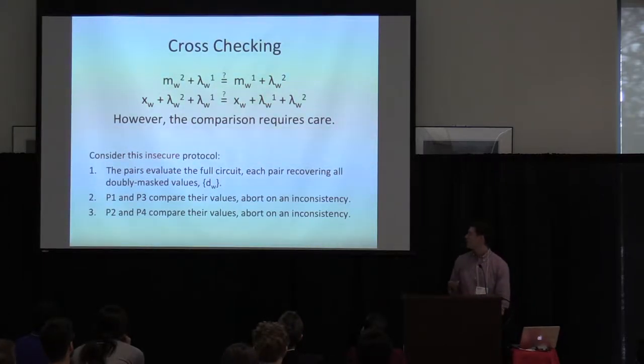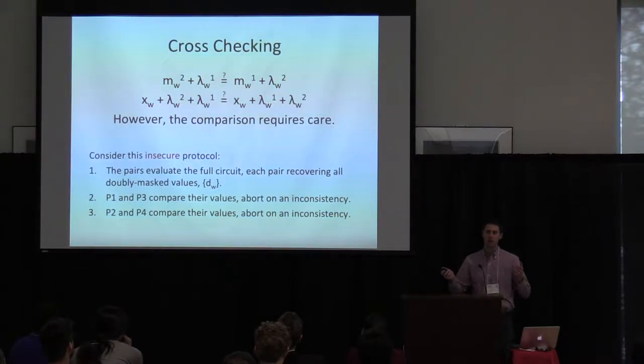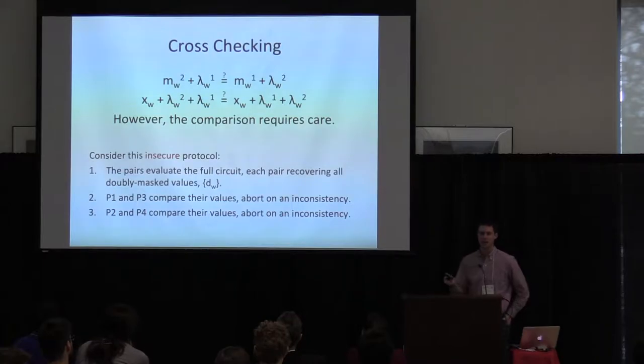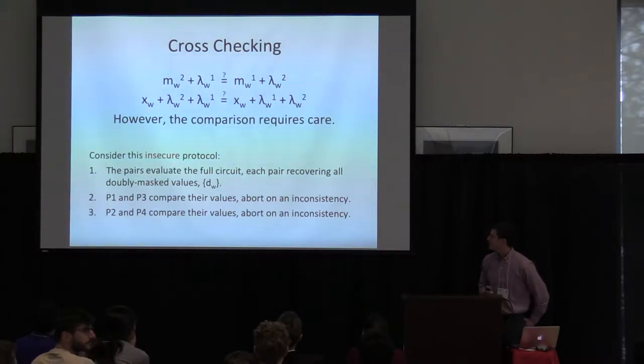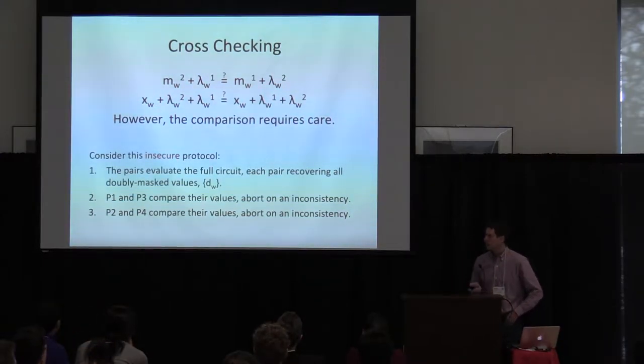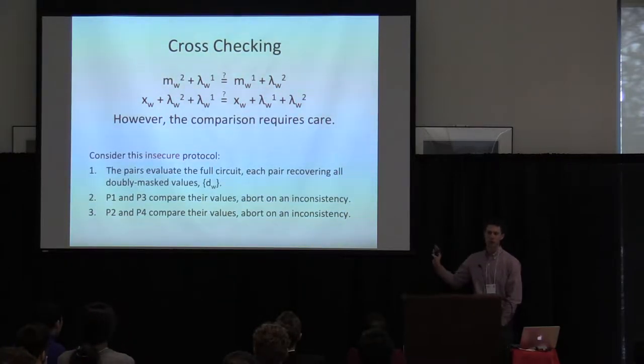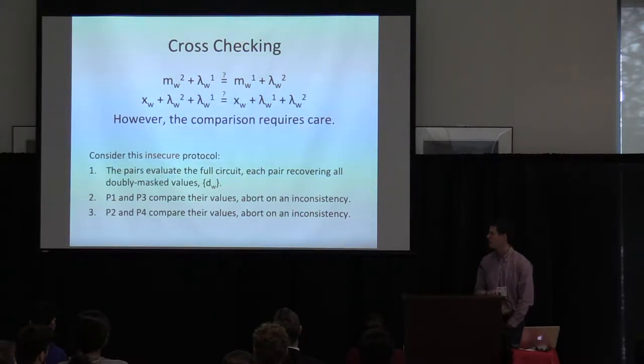For that purpose, I'm going to define something called a double mask, a doubly masked value. So remembering that we have two independent instances here, but the wire value should be the same everywhere. In both executions, X_W should be the same. One pair knows the mask that the other set was using, and that pair knows the mask that the first set was using. We can't expose the wire value to each other. Nobody should see that. But what we can do is I can add the mask you guys were using, and you can add the mask that we were using, and then again, we should have exactly the same value. So what we do is we compare these doubly masked values with each other wire by wire. Let me just point out that if you do this naively, there actually is an attack.